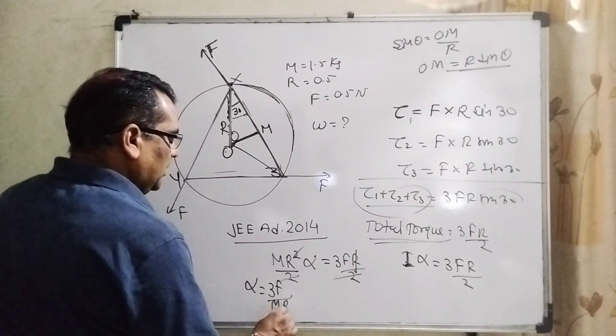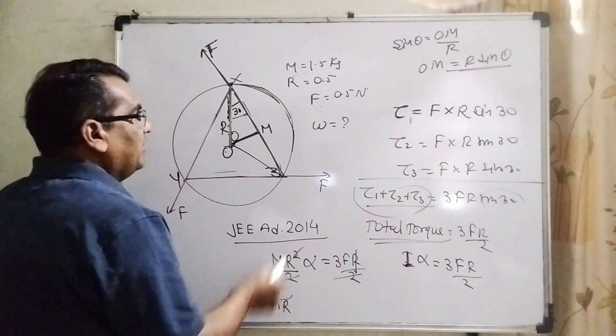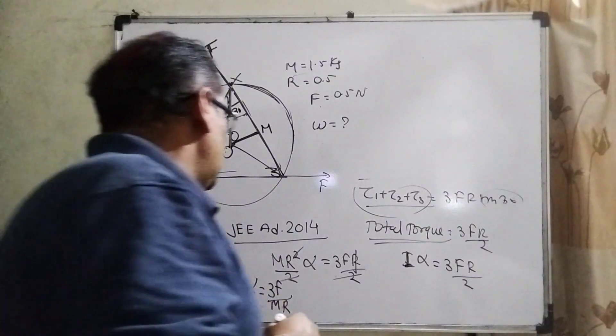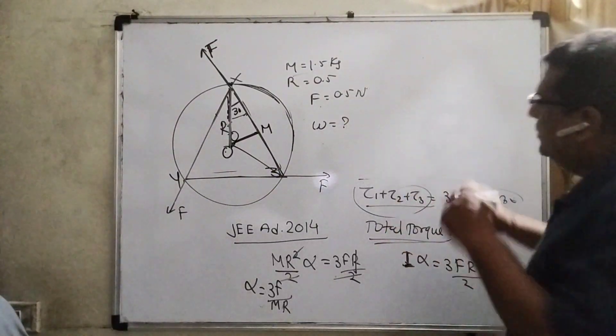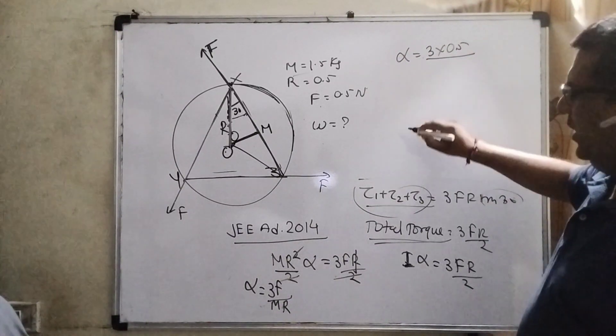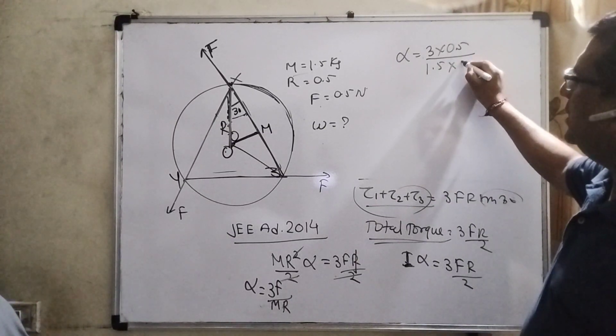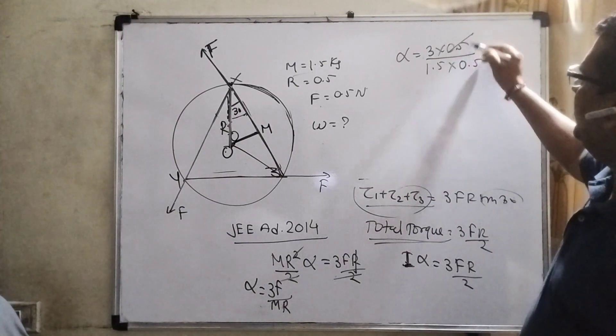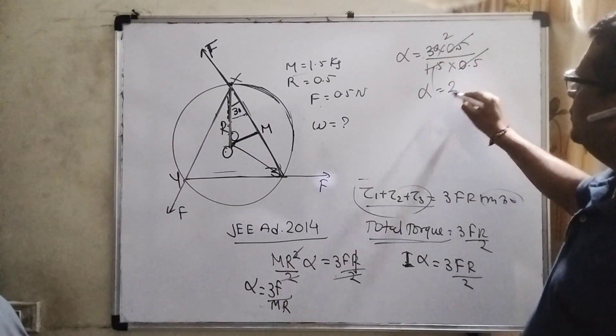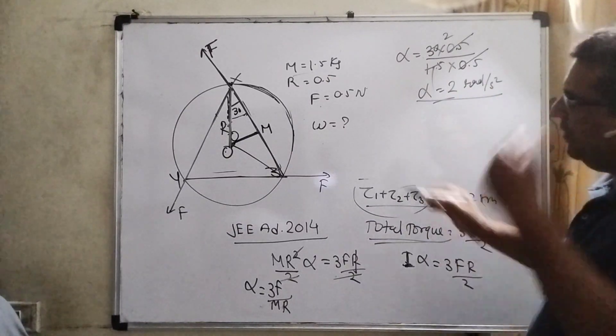Now, you have given F, you have given mass, you have given the radius. Substitute all these values and find out the value of alpha. Now, alpha equal to 3 times F which is 0.5, divided by M which is 1.5, times R which is 0.5. The 0.5 and 0.5 cancel. Removing this decimal, 15 becomes 3. Then 2 radian per second square is alpha.